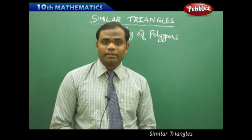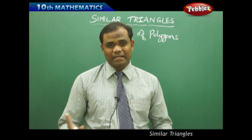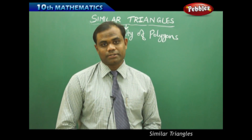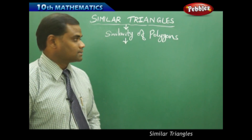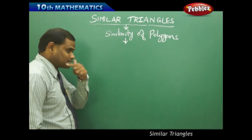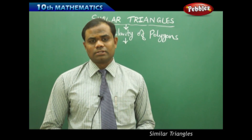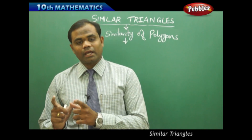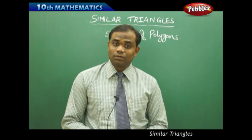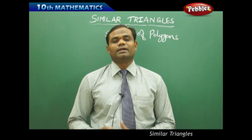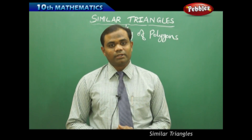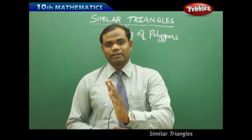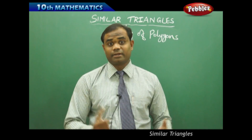Now let's see similarity of polygons. Now that we have discussed about similarity of triangles, when do we say two polygons are similar is the biggest question. The property is the same — two triangles are similar if their corresponding angles are equal and their corresponding sides are in the same ratio. Same way for a polygon, two polygons are said to be similar if their corresponding angles are equal and their corresponding sides are in the same ratio.